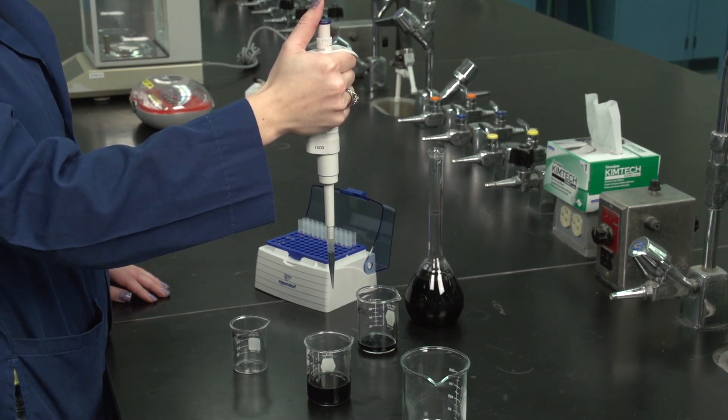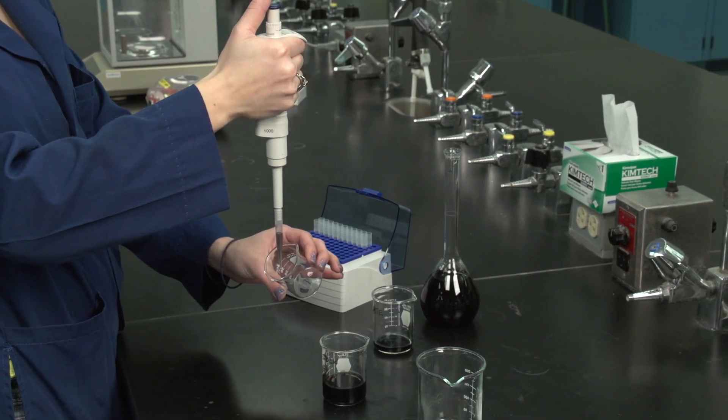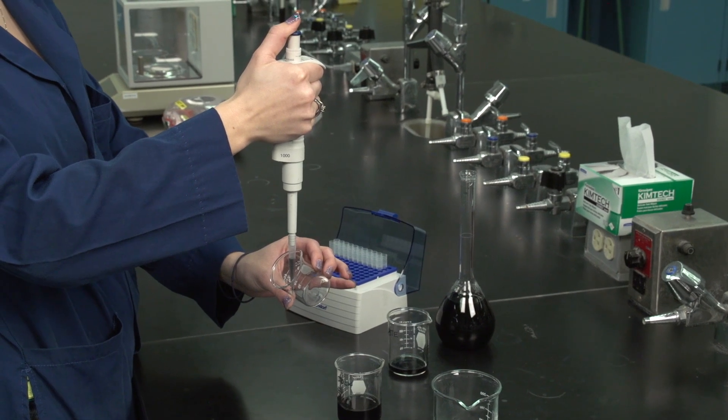Holding the pipette vertically, tilt the receiving vessel and dispense the liquid down the inner wall by pressing the plunger slowly to the first stop.